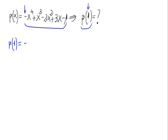So this is minus x raised to the 4th, instead of x we have to write the 1, so that is minus 1 to the 4th plus 1 cubed minus 2 times 1 squared plus 3 times 1 minus 1.